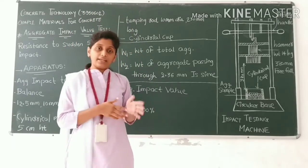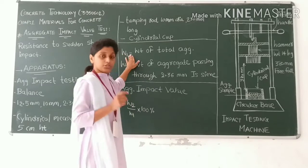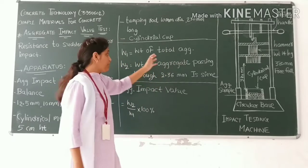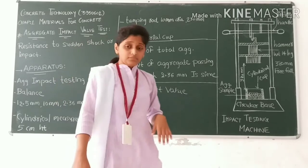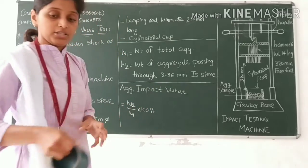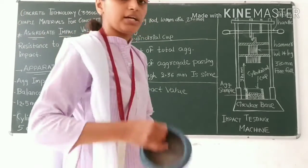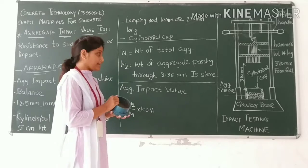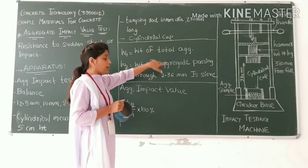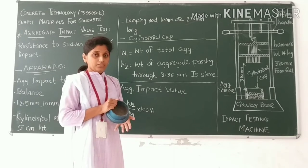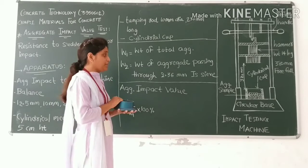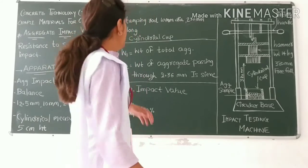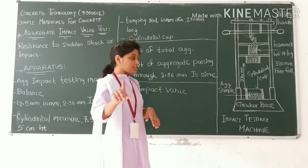We record the total weight of the aggregate filled in the cylindrical measure. Then we transfer this aggregate into the impact testing machine cup. We apply 25 blows using the impact testing machine hammer.